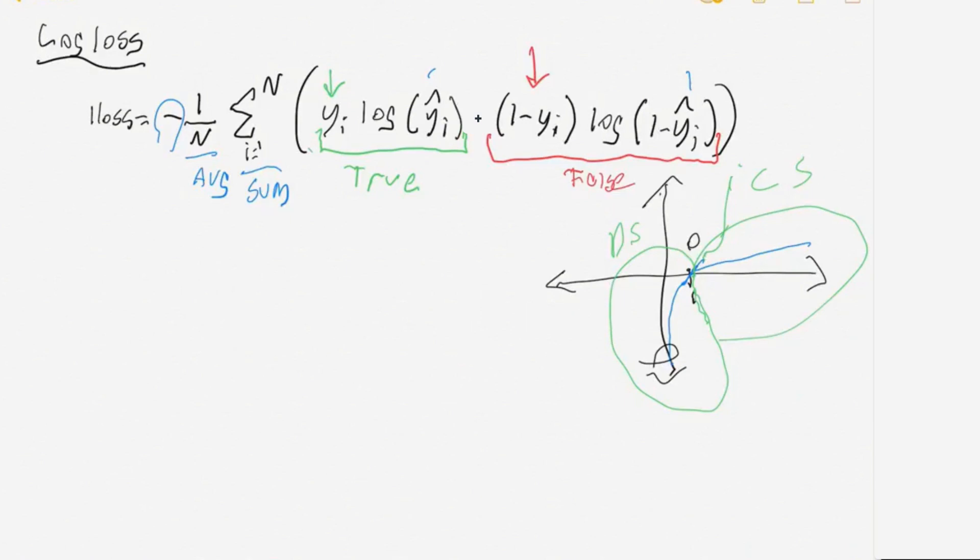If y sub i that is the absolute truth that is the value from the training set that you're comparing against. If it's true then this is going to be 1. The green y sub i is going to be 1. If it's false then it's going to be 0. So the first coefficient the green arrow is going to be 1 in all cases where we are dealing with true values and the red arrow is going to be false in all cases where we're dealing with false values because of the 1 minus. So that essentially turns off these two sides so one of those two sides is going to cancel out each time depending on if it's true or if it's false.